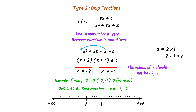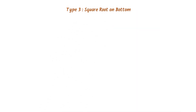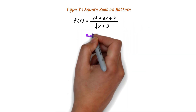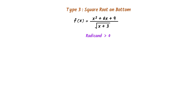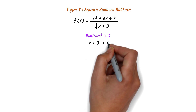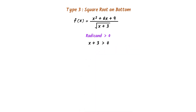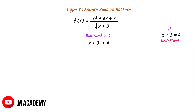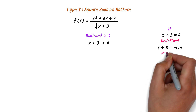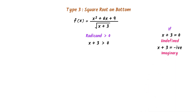The third type of problems involves a square root in the denominator. In such functions, the radicand should be greater than 0. The radicand is x + 3 and it must be greater than 0 — if x + 3 equals 0, the denominator becomes 0 and the function is undefined. If x + 3 becomes negative, the square root of a negative number is imaginary and the function is again undefined. Therefore, the radicand should be greater than 0.